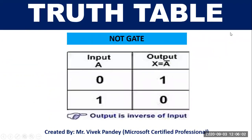Truth table of the NOT gate: if the input is zero, then the output will be one; if the input is one, then the output will be zero. Thank you, have a nice day.